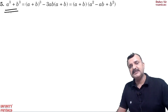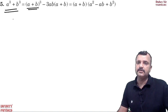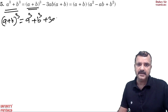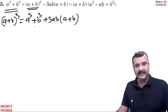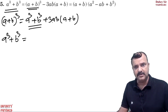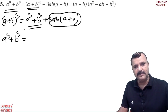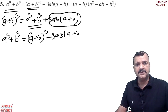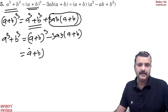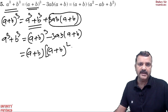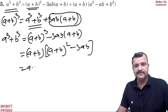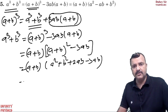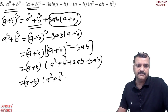Same way, if you say (a + b) whole cube is equal to a cube plus b cube plus 3ab(a + b), I am asking you to tell me the value of a cube plus b cube. Take the 3ab(a+b) term to the left side: a cube plus b cube equals (a+b) whole cube minus 3ab(a+b). Take (a+b) common: a cube plus b cube equals (a+b) times [(a+b)² − 3ab]. Simplify: (a+b) times [a² + b² + 2ab − 3ab] = (a+b)(a² + b² − ab).